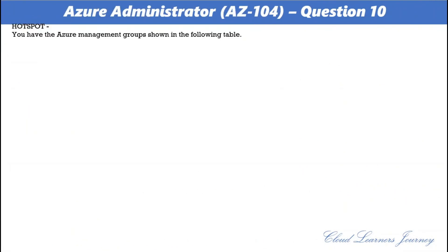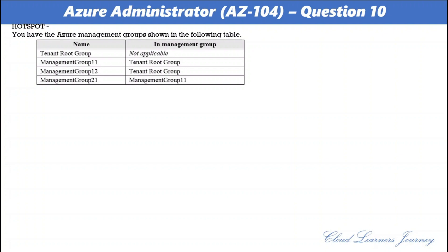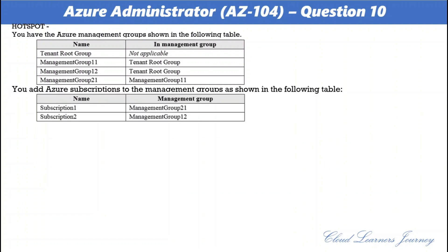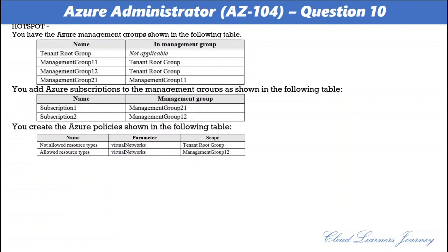Question number ten. You have Azure management groups where management group 11 and management group 12 are members of the tenant root group, and management group 21 is a member of management group 11. Subscription 1 is a member of management group 21, and subscription 2 is a member of management group 12. You create two Azure policies: 'Not allowed resource type' with parameter for virtual networks scoped to the tenant root group, and 'Allowed resource types' with parameter for virtual networks scoped to management group 12.